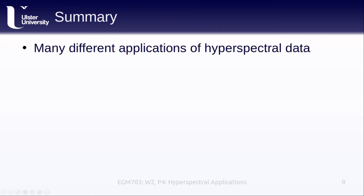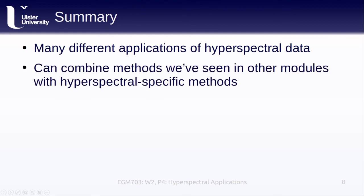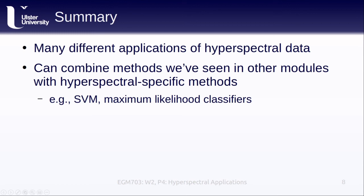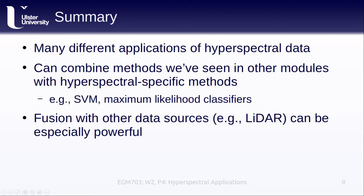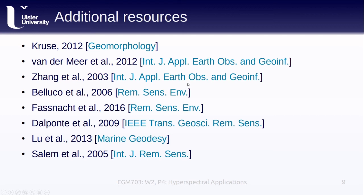In this lesson, we've looked at a few different applications of hyperspectral remote sensing. As we've seen, there are a number of different applications across a number of different fields of study. We've also seen how many of these studies combine methods we've seen in other modules with hyperspectral-specific methods — for example, support vector machine and maximum likelihood classifiers alongside minimum noise fraction reduction. We've also seen how fusion with other data sources, such as LiDAR, can be especially powerful, particularly for applications like tree species identification. I've included links to the different articles referenced in the presentation, also available on the slide notes and as PDFs on Blackboard or in the Zotero library. I've also added a few additional papers to the Zotero library that weren't covered here, so feel free to browse those as well. That's all for this lesson — I hope you found it interesting, and if you have any questions, please don't hesitate to email me or post in the discussion forum on Blackboard.